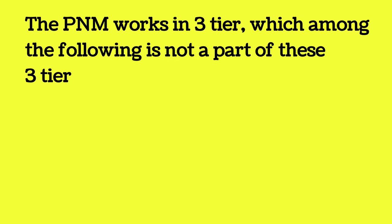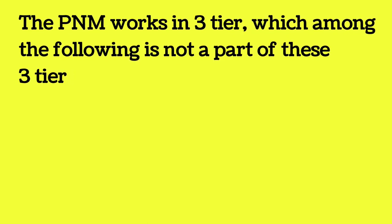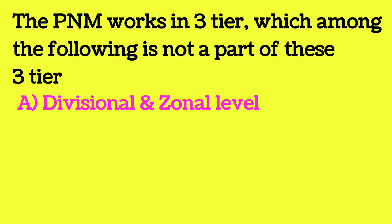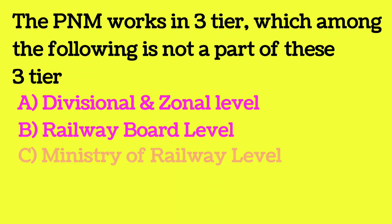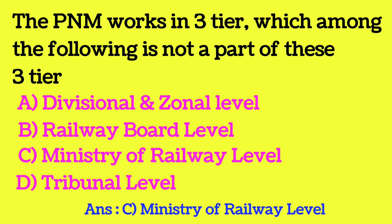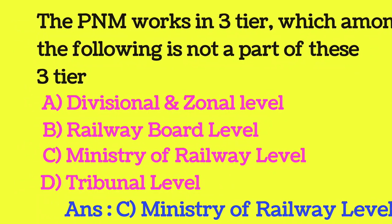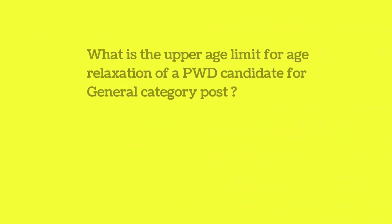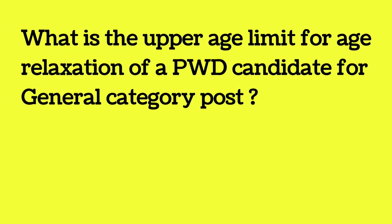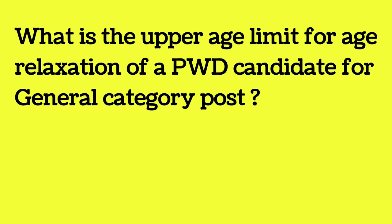The PNM (Permanent Negotiating Machinery) works at three tiers. Which of the following is not part of these three tiers? Option A: Divisional and Zonal level. Option B: Railway Board level. Option C: Ministry of Railway level. Option D: Tribunal level. PNM is not working at the Ministry of Railway level, so the answer is C — Ministry of Railway level.